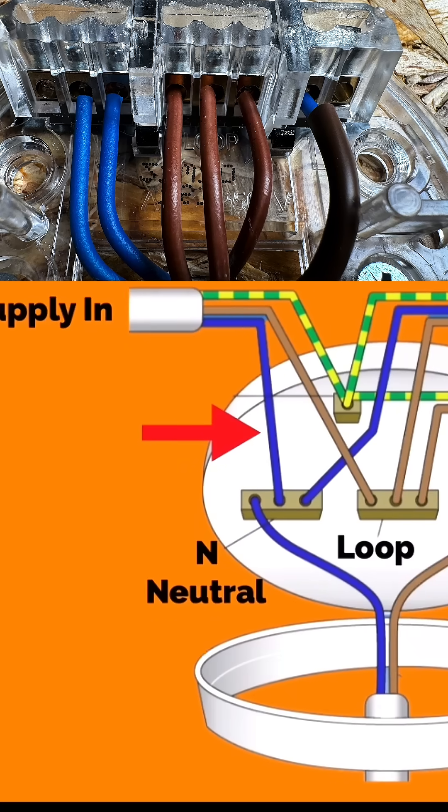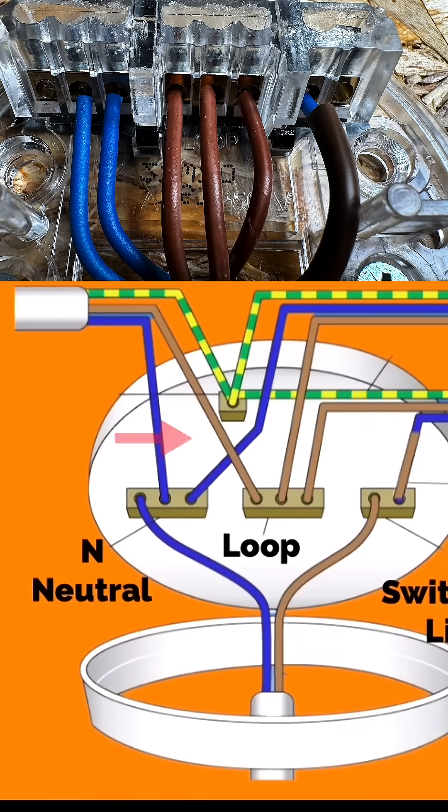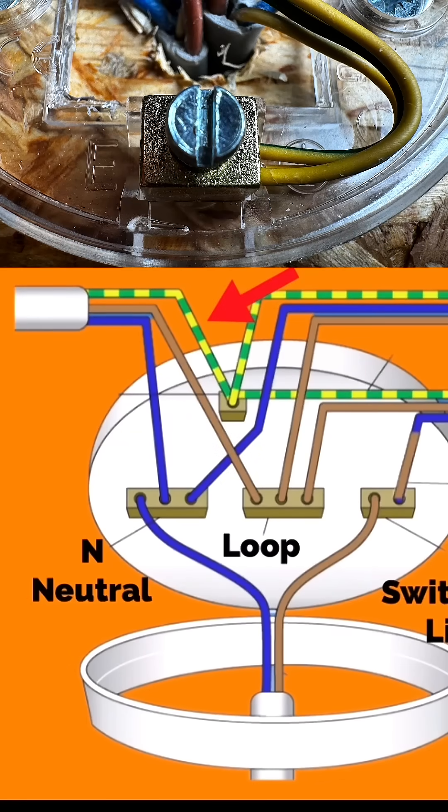It will bring in a permanently connected line, which is connected into the loop terminal in the centre. It will bring in a circuit protective conductor, terminated into the earth connection within the ceiling rose itself.